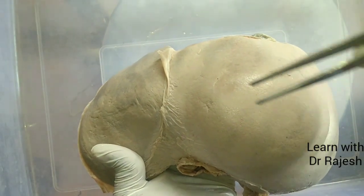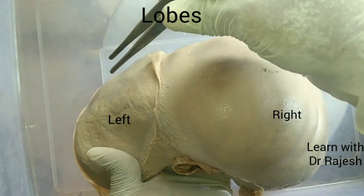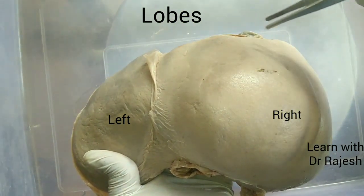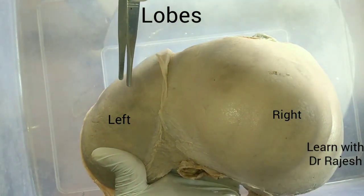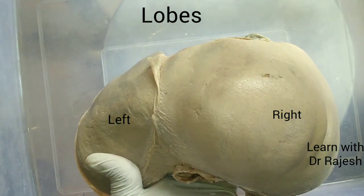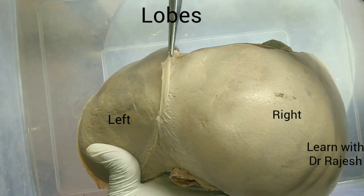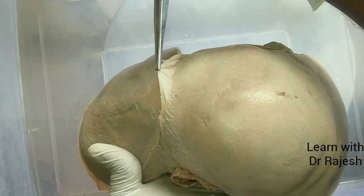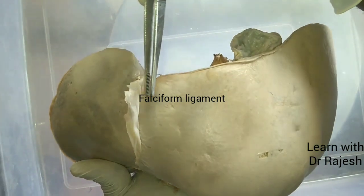Let's see the lobes of the liver. This is the right lobe and this is the left lobe. The right lobe is very large, occupying almost five-sixths of the liver, while the left lobe is small, occupying only one-sixth. Anteriorly, these two lobes are separated by the falciform ligament.